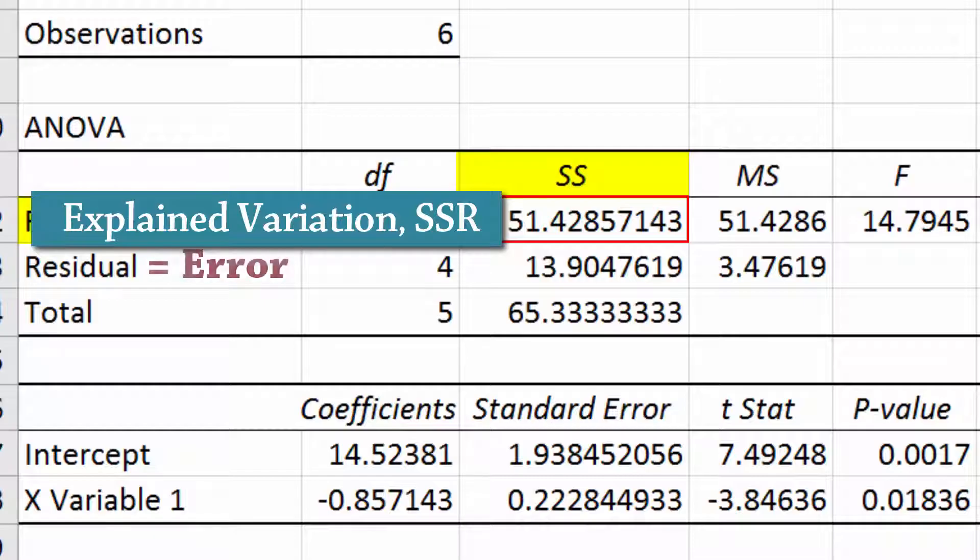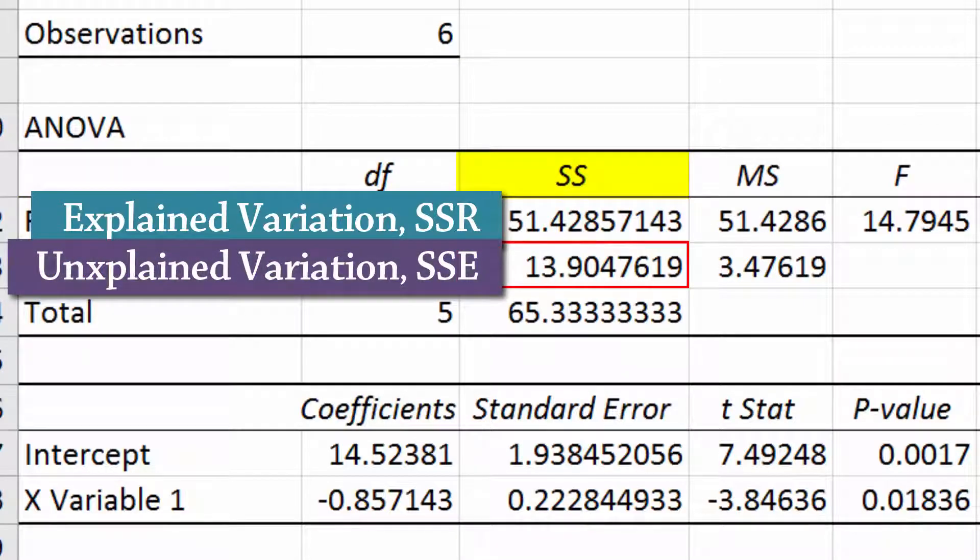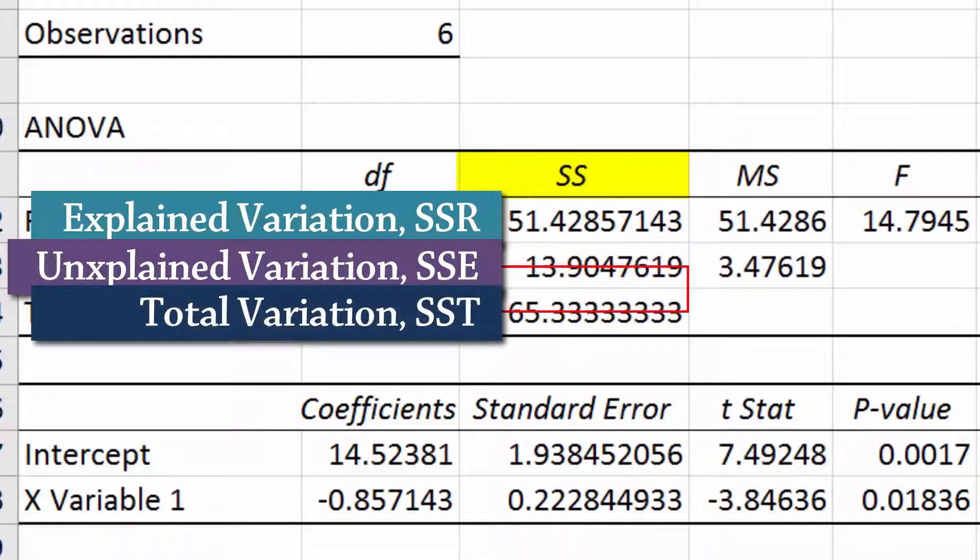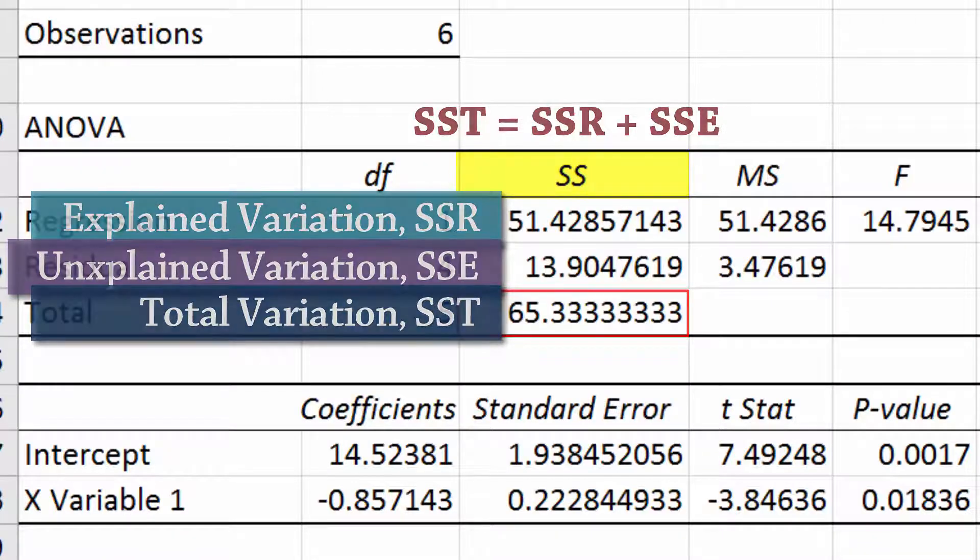For residual or error, SSE here is the amount of unexplained variation. The sum of squared total or SST here is the sum of SSR and SSE, also called total variation.